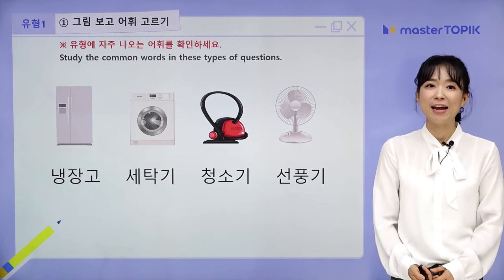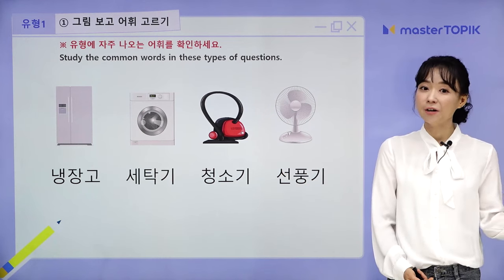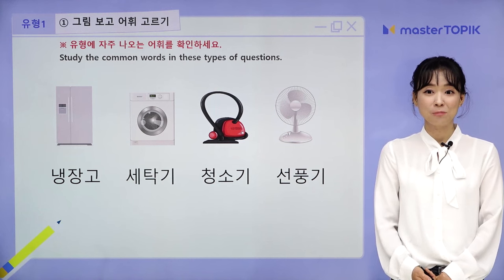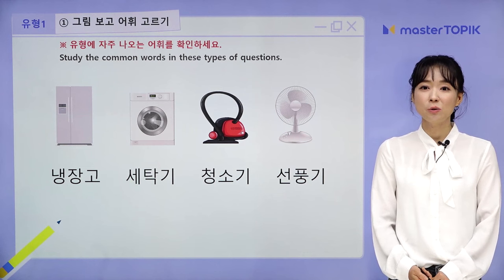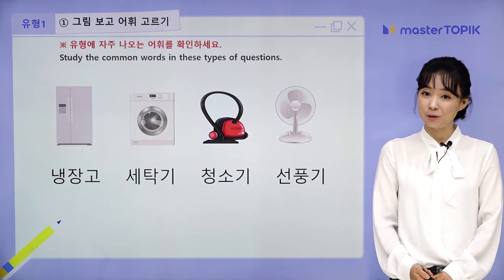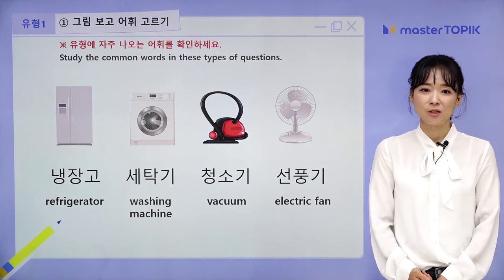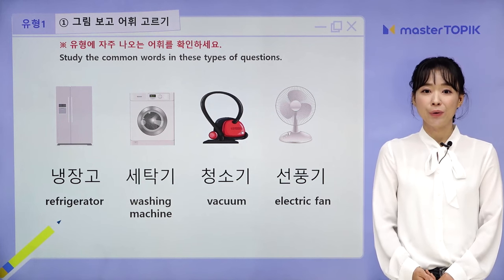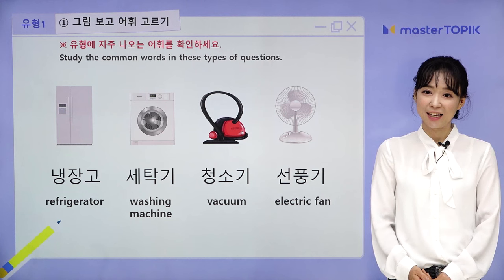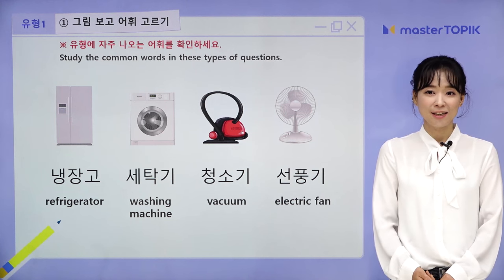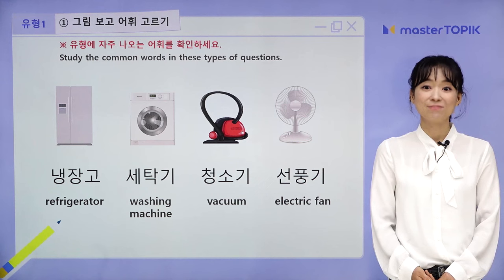Another set of words — household appliances: 냉장고 (refrigerator), 세탁기 (washing machine), 청소기 (vacuum cleaner), 선풍기 (fan). Let's repeat: 냉장고, 세탁기, 청소기, 선풍기. Great.